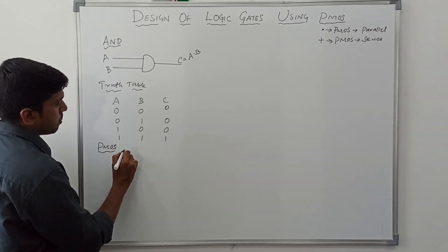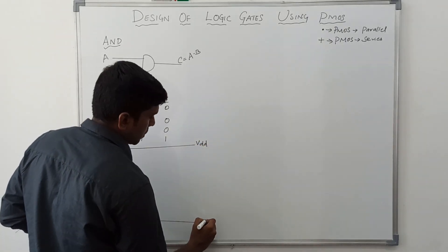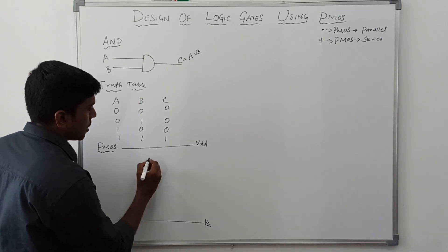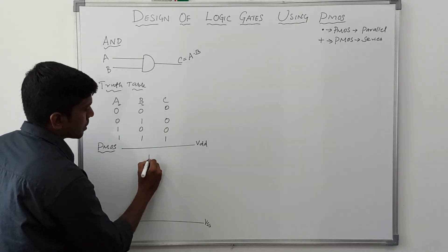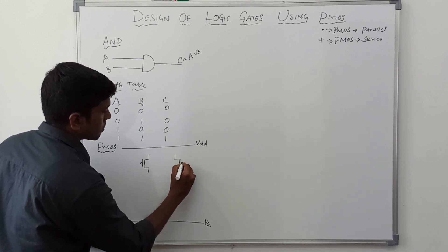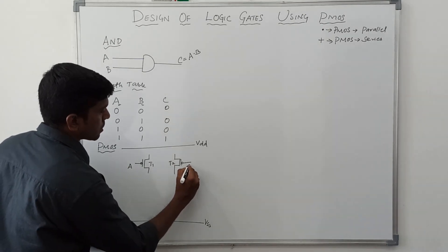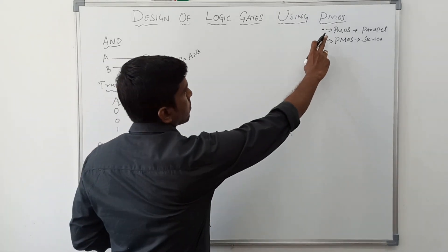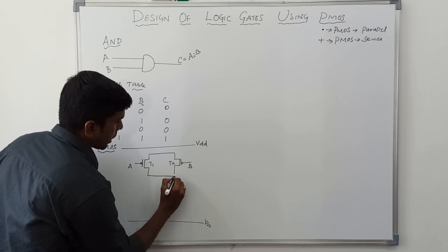Now I am going to design the AND gate operation using PMOS transistors. The first line represents VDD and the next line represents VSS — these are the power supply lines for the AND gate. Since we have two variables, we need two transistors: T1 with input A and T2 with input B. The dot operator is present in the boolean expression, so the PMOS transistors are connected in parallel.